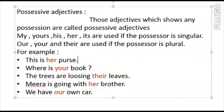'The trees are losing their leaves.' The leaves belong to the trees, so their is the possessive adjective. 'Meera is going with her brother.' Her is the possessive adjective — her shows the possession that the brother is of Meera. 'We have our own car.' The car belongs to us, so our is the possessive adjective here.